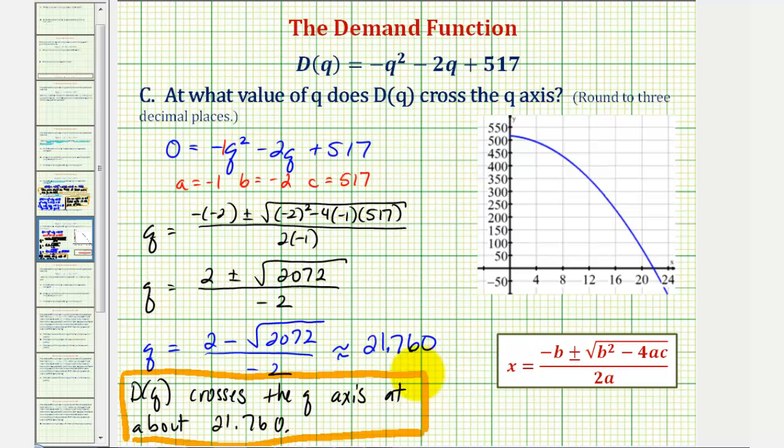So to understand what this means, this is the value of Q, where D of Q, the price would be zero. So this is telling us that if the price was zero, the demand for the item would not be 21.760, because remember Q is in thousands, the demand would be approximately 21,760 units. Not that you'd ever set a price of zero, but if it was zero, this represents the demand from the market.